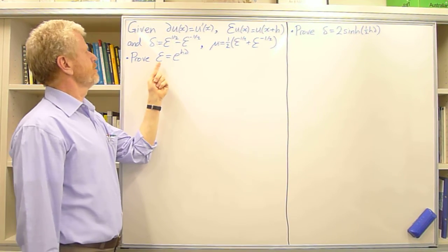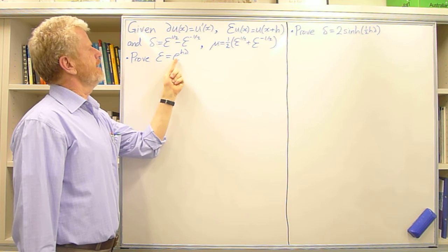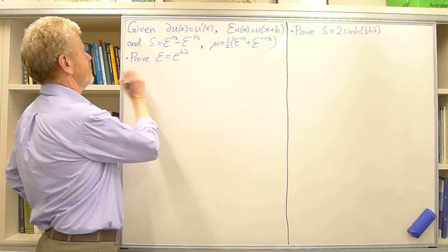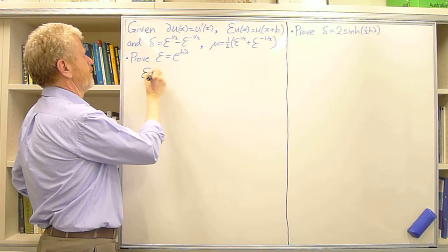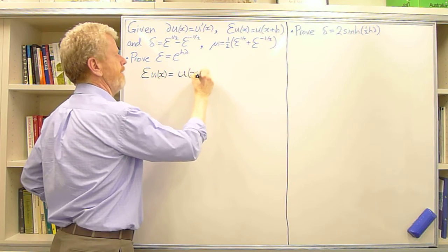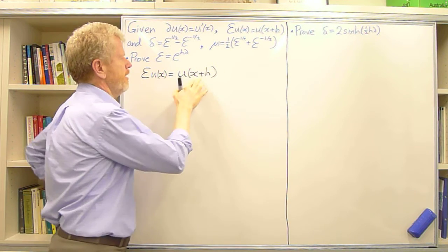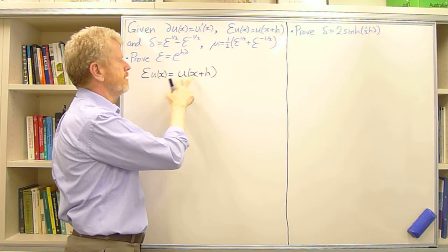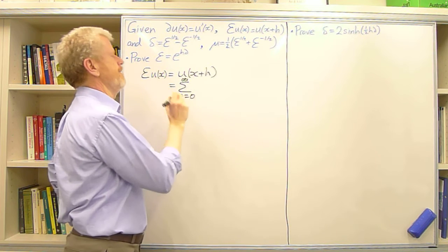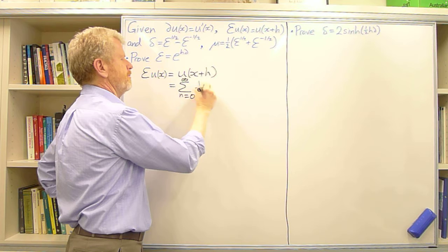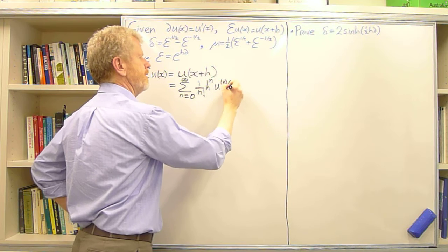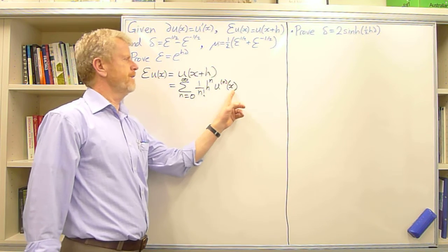The first result we're going to prove is that the shift operator E equals e^(hD), where D is the derivative operator. Starting from the definition, E acting on u(x) is u(x+h). Using Taylor series, this equals the sum from n=0 to infinity of (1/n!) times h^n times the nth derivative of u evaluated at x.